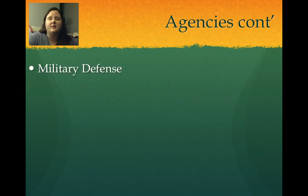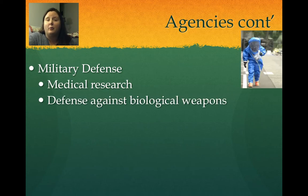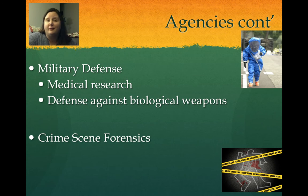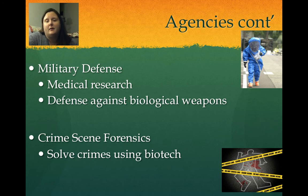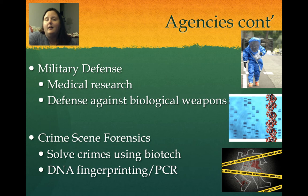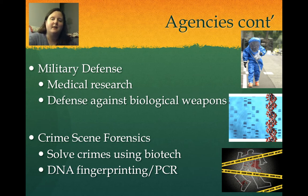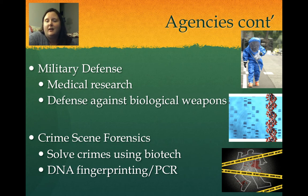Other agencies involved in biotechnology include military defense, which does medical research and defense against biological weapons. Crime scene forensics — police, FBI, etc. — use biotechnology to help solve crimes. They do DNA fingerprinting or PCR to figure out whose blood or hair is at a crime scene. When they have just a few cells, that's not enough DNA to analyze, so they need to make millions of copies using PCR — polymerase chain reaction — which you'll do in the biotech class.